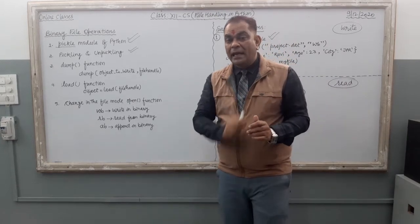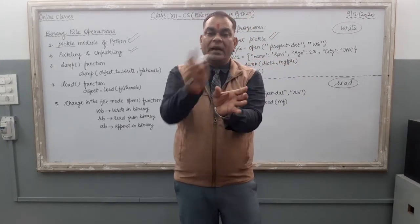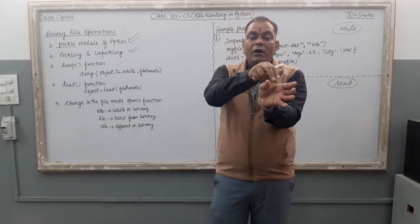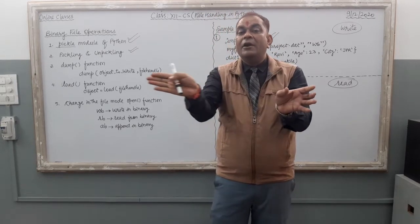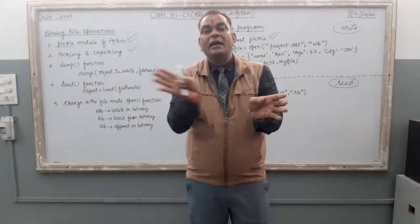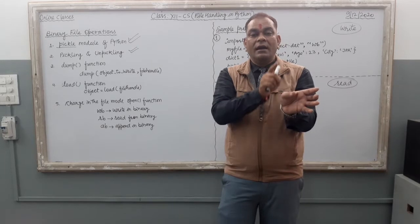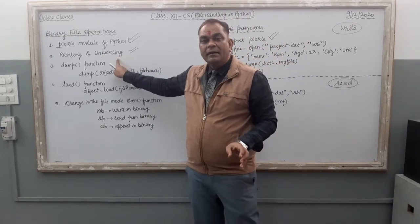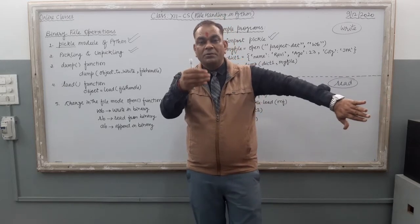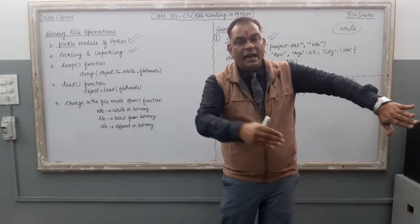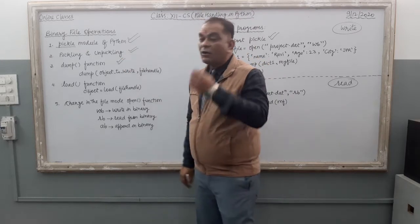What is unpickling? The data inside the binary file is in encrypted format. When you want to read a binary file, you have to convert the stream of bytes back into your normal object format — convert it into a list, a tuple, or a dictionary. To read a file, converting binary data into your object format is known as unpickling. And to write your Python object data — list, tuple, dictionary — into a file by converting it into a stream of bytes is called pickling.